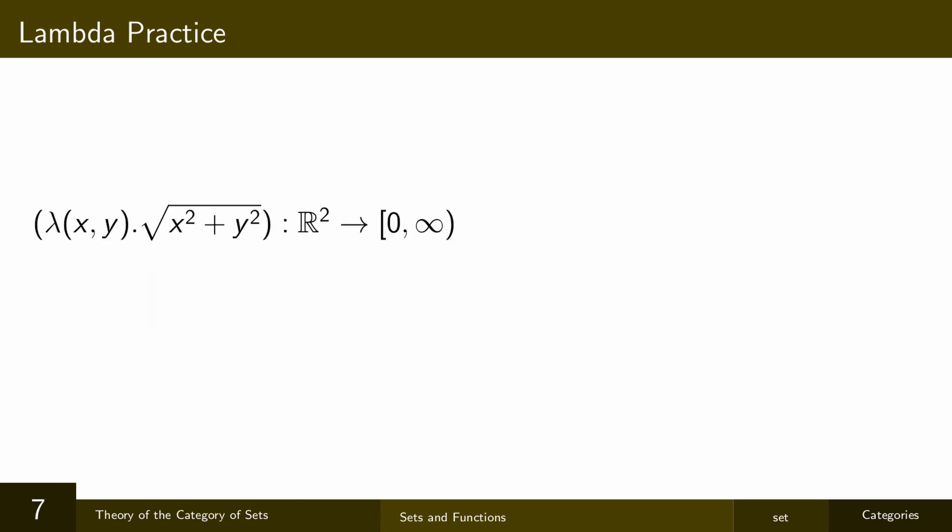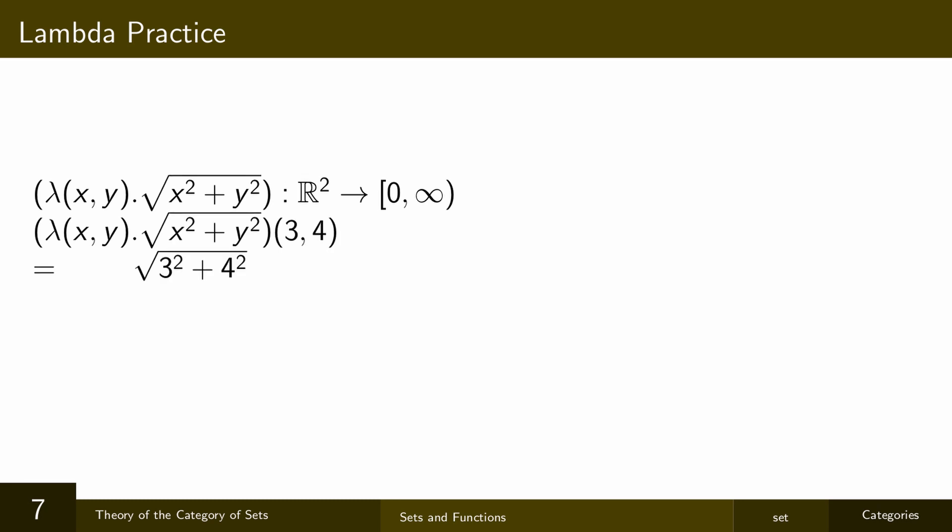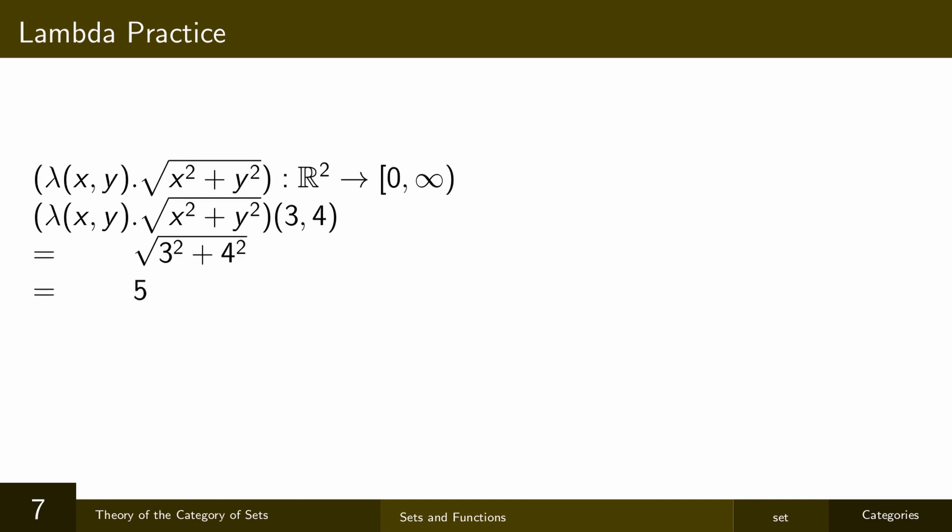Here's another example, which takes a pair of real numbers and returns the square root of the sum of their squares, which is going to be a non-negative real number. So if I apply it to the pair (3, 4), then I substitute in 3 for x and 4 for y, and calculate that that gives out 5. Note that we could have made the codomain here all real numbers instead of just the non-negative ones.